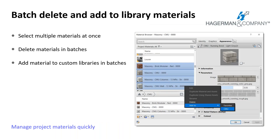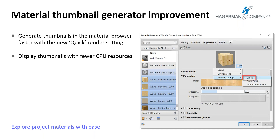This is a nice addition to manage multiple project materials — simply select them and right-click to choose between deleting them from your model or adding them to a custom library. When working on the appearance tab of the material browser, utilize the drop-down menu next to the material thumbnail to configure rendering settings for the thumbnail image. The newly added quick rendering setting expedites the generation of the thumbnail image when changing your material selection, rendering faster and consuming fewer CPU resources.